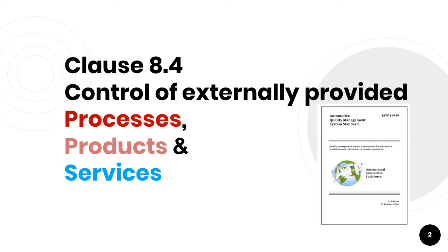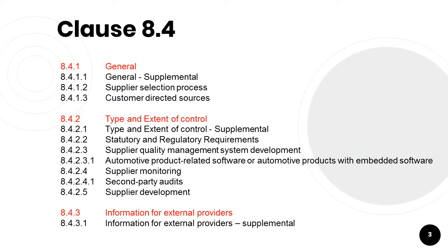In this standard, clause 8.4 explains the requirement for the control of externally provided processes, products and services. Clause 8.4 is further subdivided into three sub-clauses. 8.4.1 explains the general requirement and supplier selection processes and customer-directed sources handling. 8.4.2 explains the type and extent of control, statutory and regulatory requirements, supply quality management system development, supply monitoring, second party audits and supply development. The last sub-clause 8.4.3 explains the information for external providers.